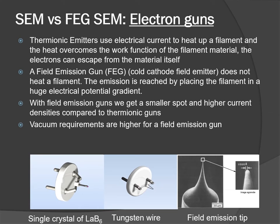Comparing SEM with FIB-SEM, we get different types of electron guns. Thermionic emitters use electrical current to heat a filament, and the heat overcomes the work function of the filament material so electrons can escape. A field emission gun does not heat a filament; emission is achieved by placing the filament in a huge electrical potential gradient. Field emission guns produce a smaller spot and higher current densities compared to thermionic guns, but require a higher vacuum.